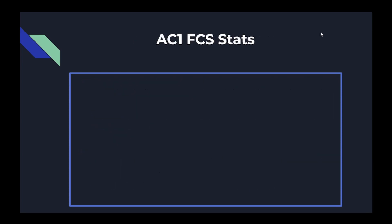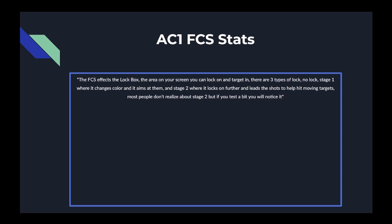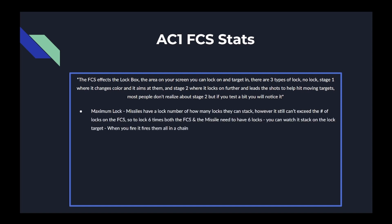The next part is the fire control system, or FCS. The FCS affects the lock box — the area on screen you can lock on and target enemies. There are three lock states: no lock, stage one where it changes color and aims at the target, and stage two where it locks on further and leads shots to help you hit moving targets. Most people don't realize stage two is there, but with a higher fire rate weapon you will notice it. The first stat is maximum lock — missiles have a lock number of how many locks they can stack, but it still can't exceed the locks on the FCS. You can watch locks stack as numbers over the target, and once you fire the chain you don't have to keep the lock box on them.